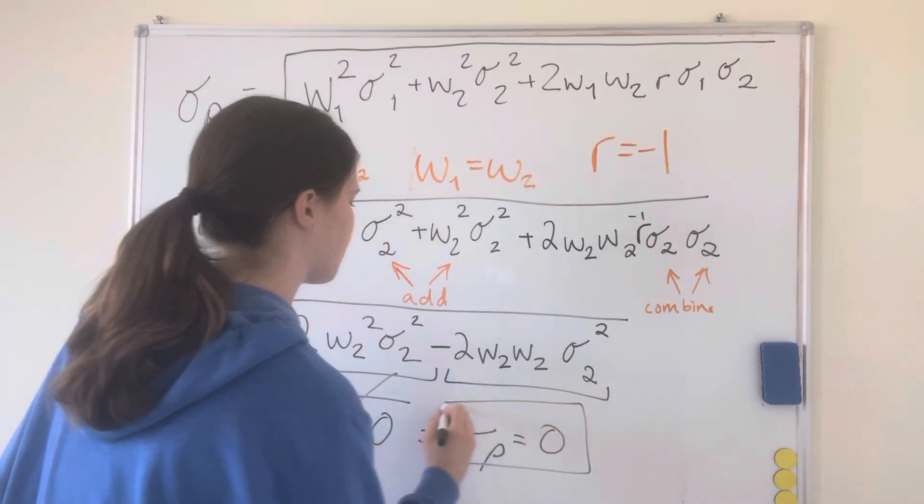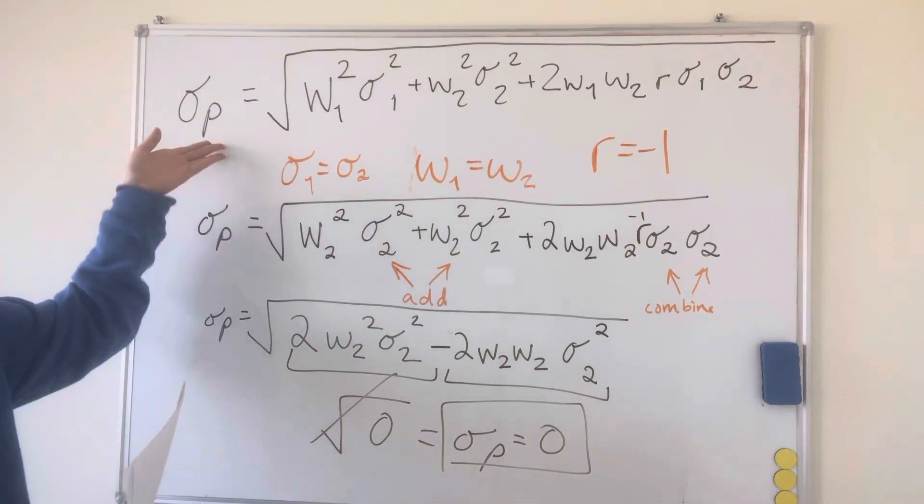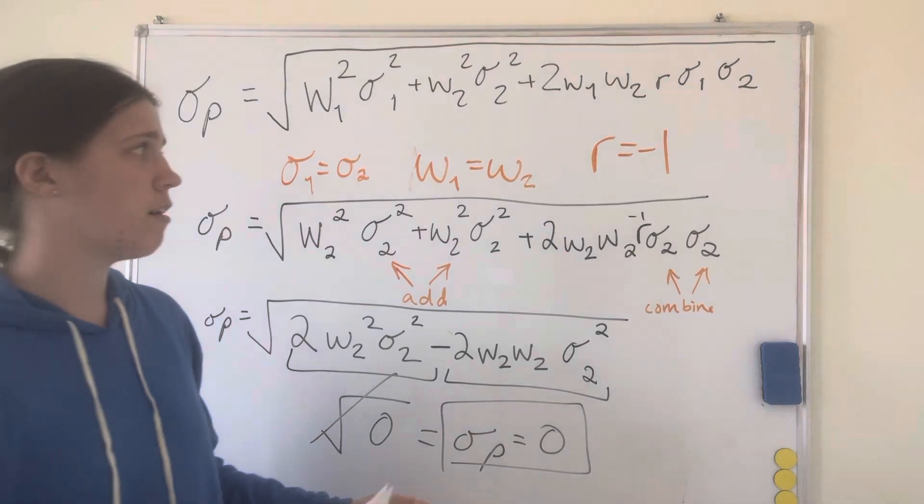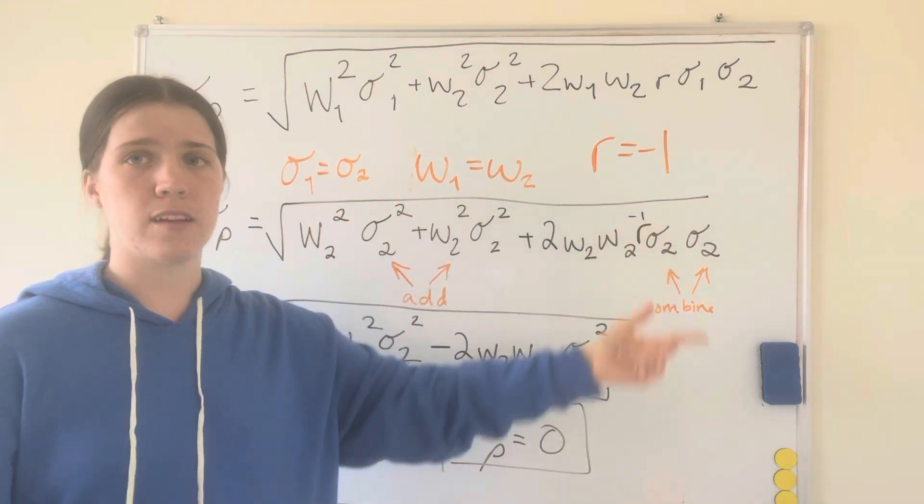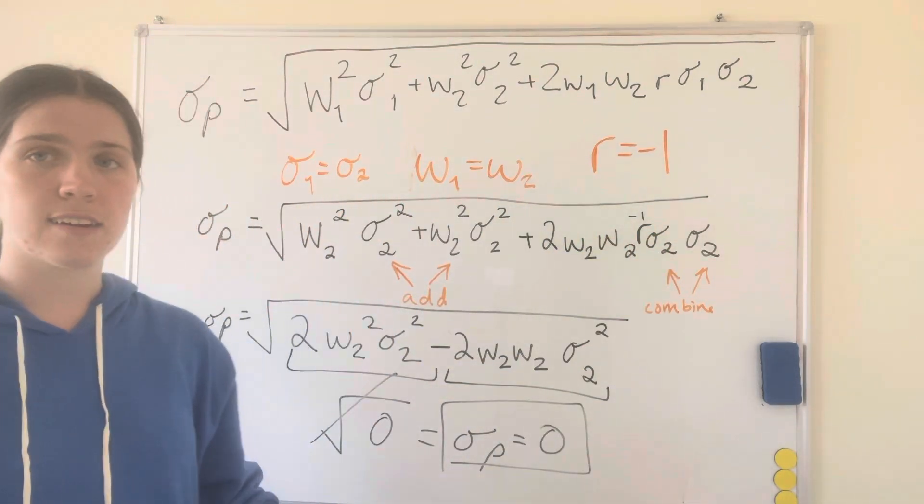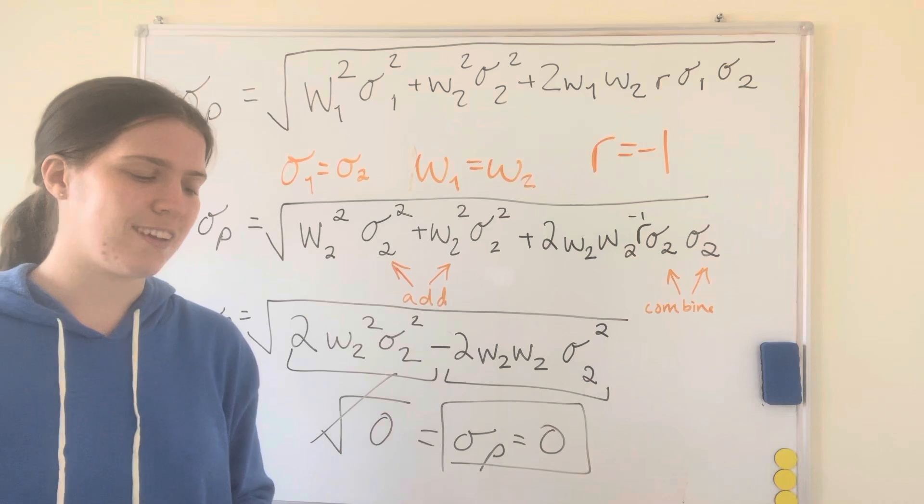And this will equal zero. So there you go, that's how this giant equation reduces down to zero if we have these inputs. And so what does this actually look like with numbers? Well, we'll do an example.